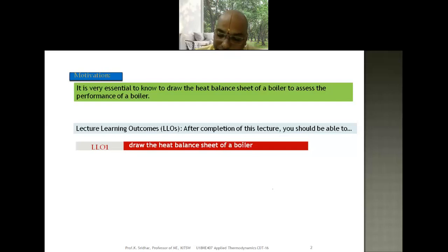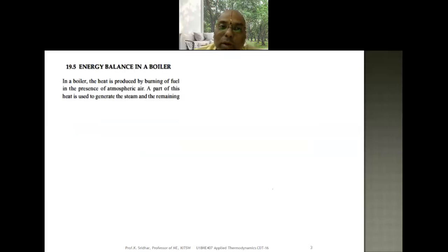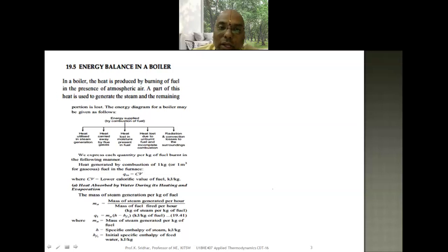After completion of this lecture, you should be in a position to draw the heat balance sheet of a boiler. First of all, what do you mean by heat balance or energy balance? In a boiler, heat is produced by the burning of fuel in the presence of atmospheric air. The heat energy liberated by burning coal is utilized in various forms in the boiler — that is the heat balance. A part of this heat is used to generate steam, and the remaining portion is lost.